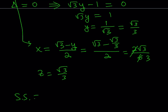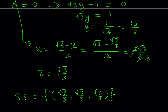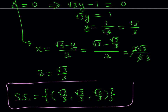Our solution set is the ordered triple (root 3 over 3, root 3 over 3, root 3 over 3). This brings us to the end of the video. Thank you for watching — I hope you enjoyed it. Please comment, like, and subscribe. I'll see you tomorrow with another video. Until then, be safe, take care, and bye-bye.